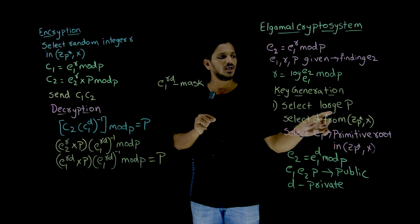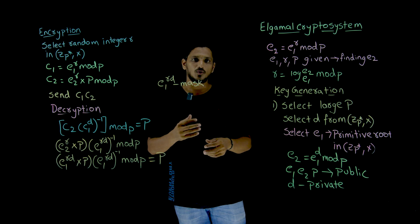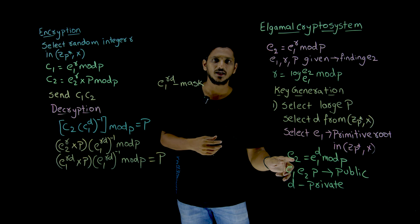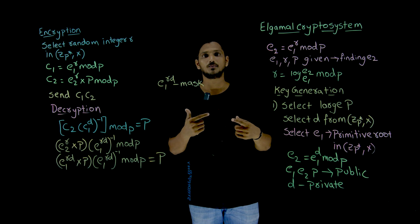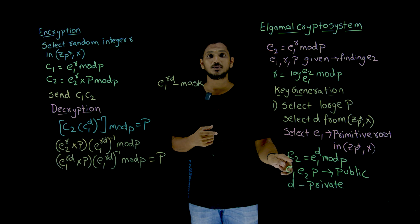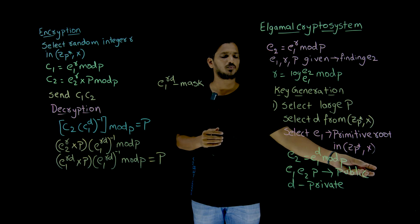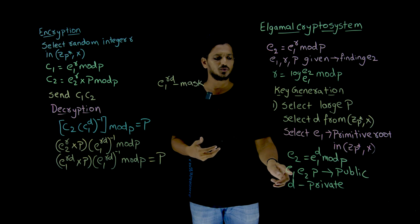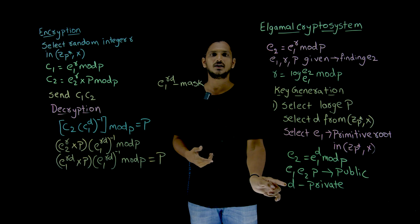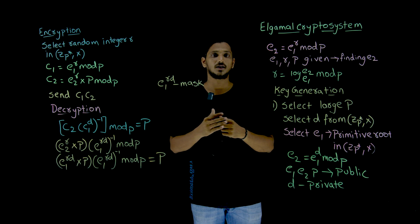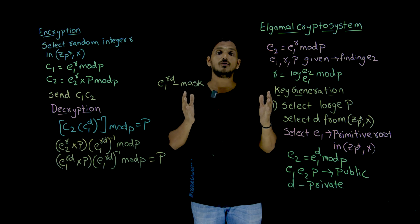Using e1, d, and p, we generate e2: e2 equals e1 power d mod p. Since e2, e1, and p are given publicly, identifying d is difficult because it is a logarithmic problem. But given e1, d, and p, identifying e2 is easy because it is an exponential problem. That is why e2, e1, and p are given as the public key, and d is the private key — because using these three, identifying d is very very difficult. It is a logarithmic problem, meaning it would take 10 to 15 years to solve even with a powerful computer.